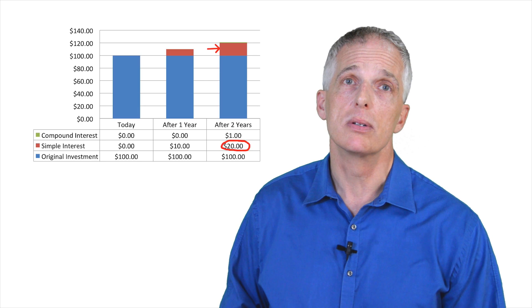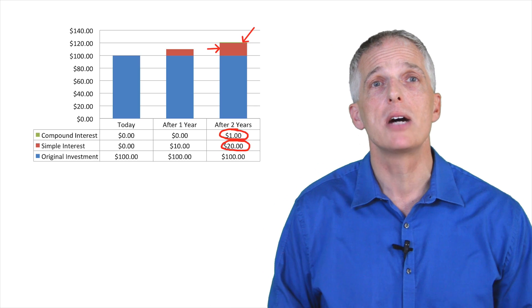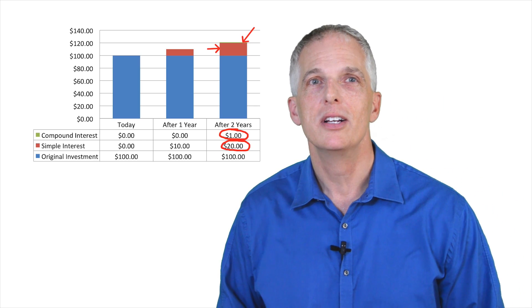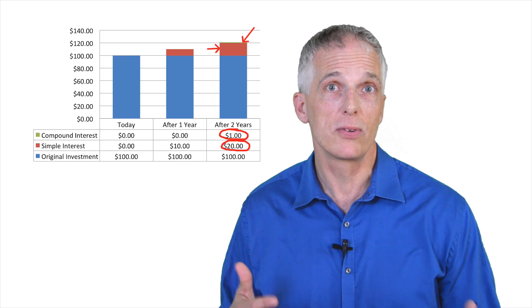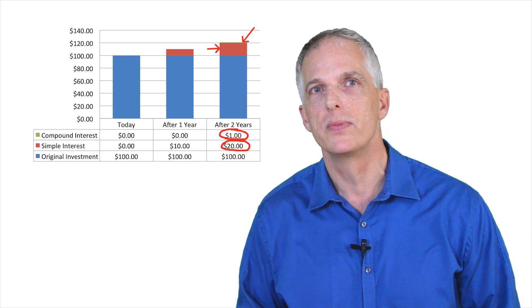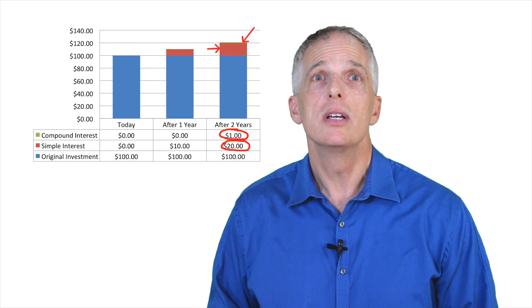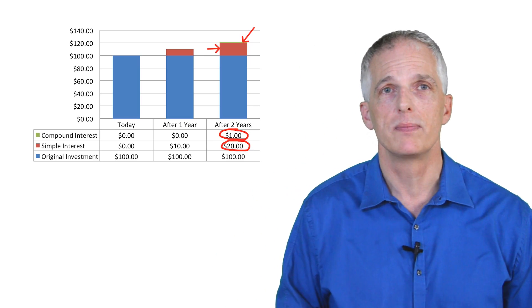However, and this is the key insight, we now also earn interest on interest, or compound interest, of $1 in the second year. This $1 of interest is 10% of our $10 interest in the first year, and is just a small sliver of green shown on the graph in the column corresponding to year two. Our total savings balance, including the $1 of compound interest, is $121 after two years. While the compound interest in this example is small — only $1 after two years — compound interest can have a huge effect on our ability to accumulate savings over longer horizons.